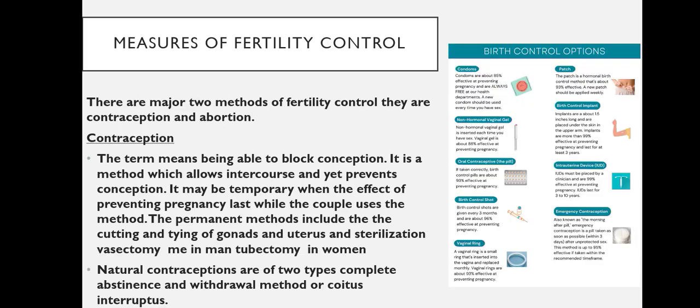Now let us look at the measures of fertility control. There are two major methods of fertility control: contraception and abortion. Contraception — the term means being able to block conception or conceiving. It is a method which allows intercourse and yet prevents conception.